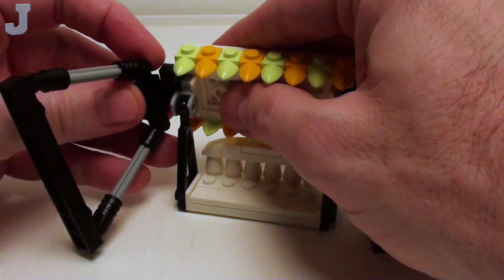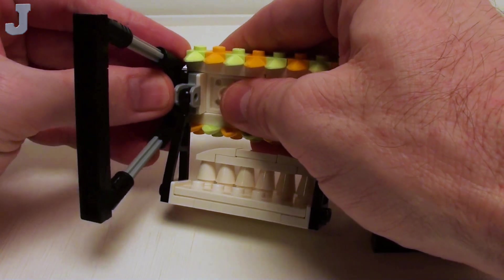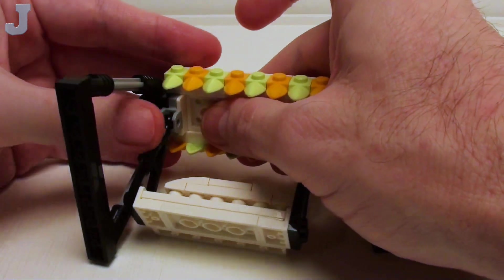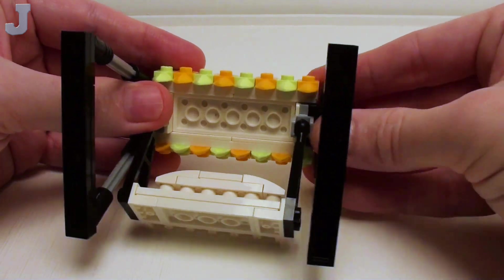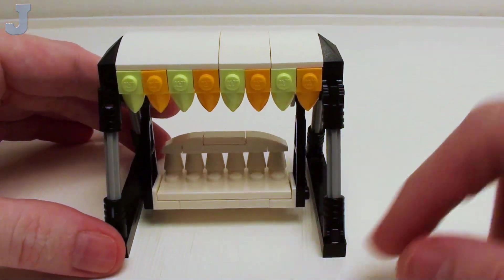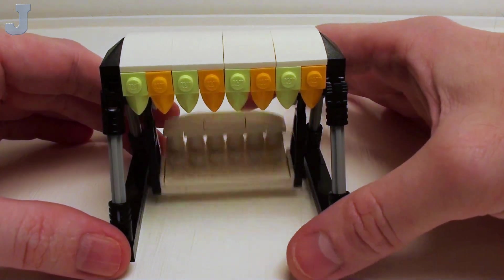Installing our swing supports is pretty simple. We're just going to place these right on those special modified 2x2 plates. Just place those right in there. And now we have a nice functional garden swing.